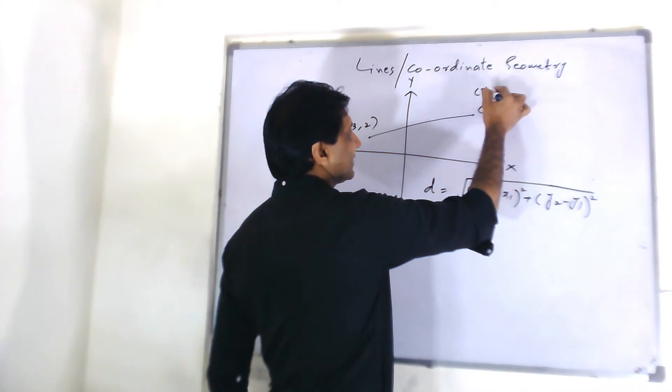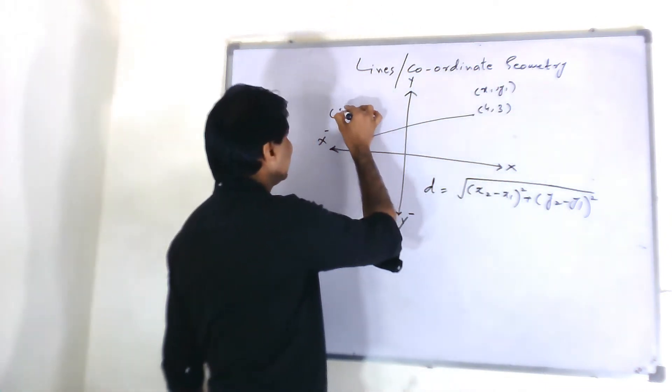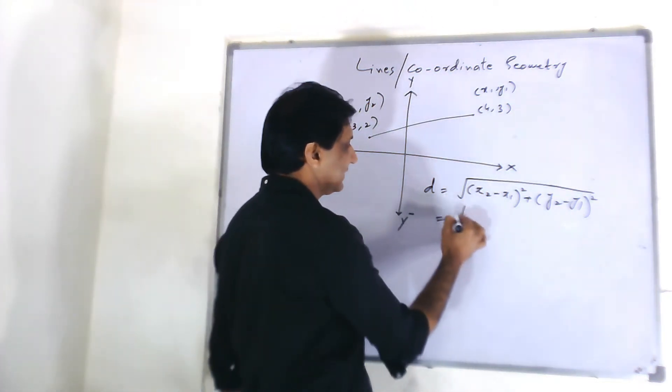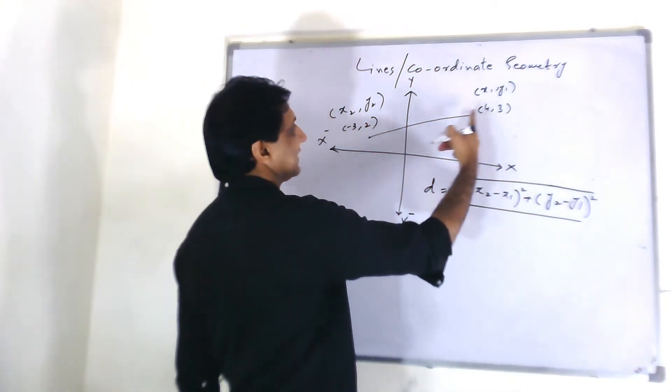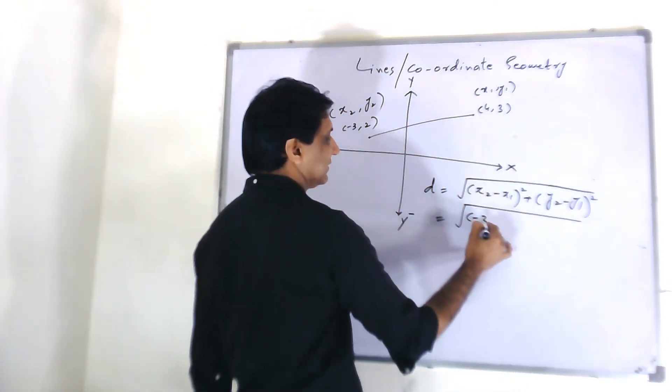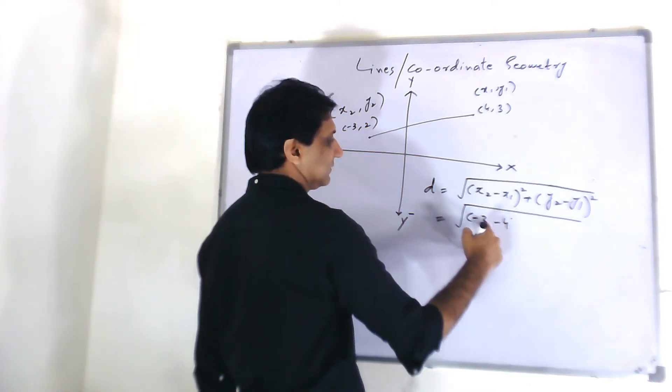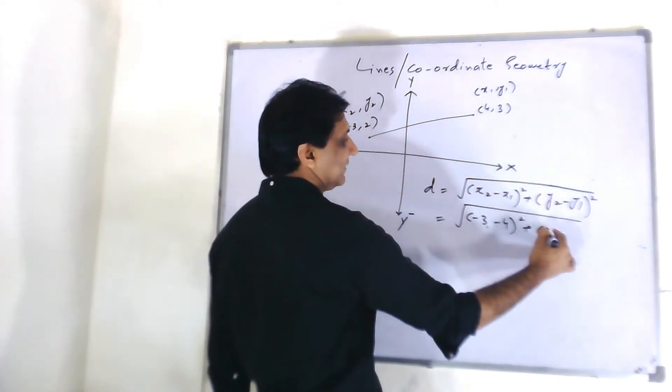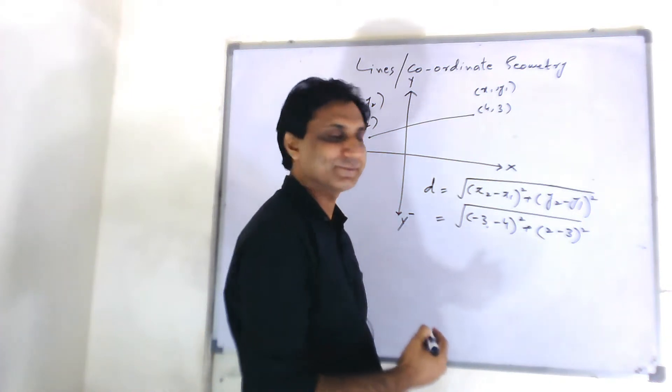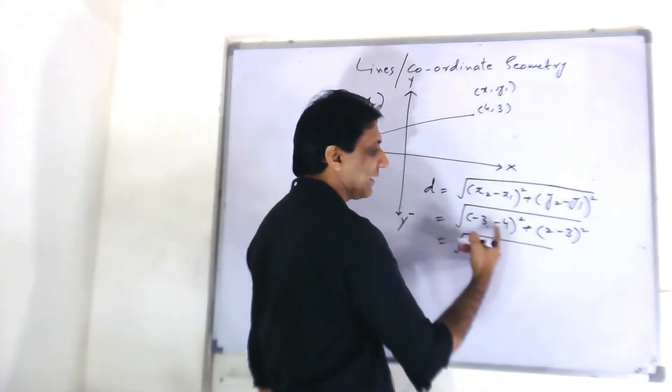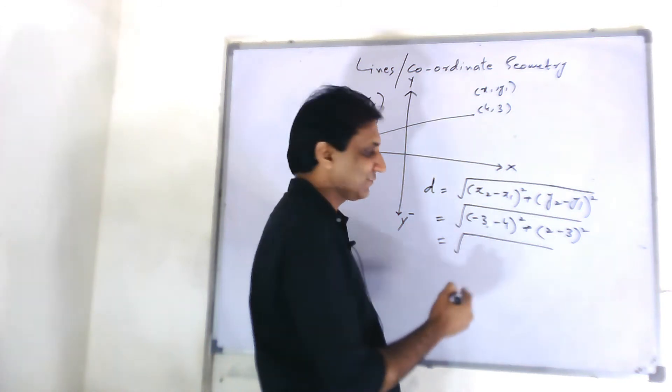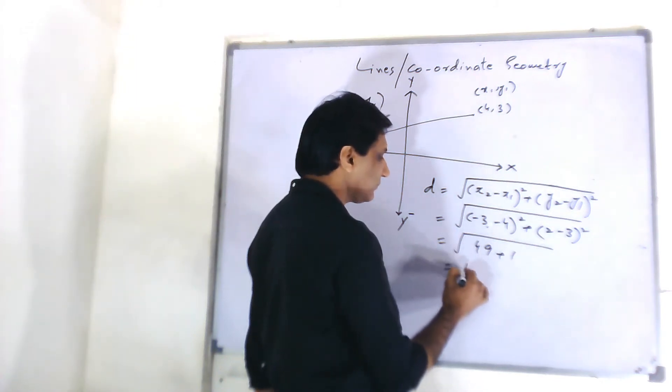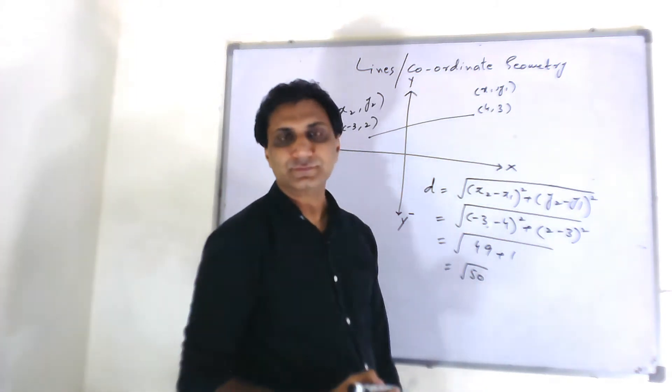If this is x1, y1 and this is x2, y2, then the distance will be x2 minus x1 minus 3 minus 4 whole square. Minus 3 minus 4 is minus 7. Minus 7 squared is 49 and 2 minus 3 is minus 1. Square is 1. So, it is under root 50.